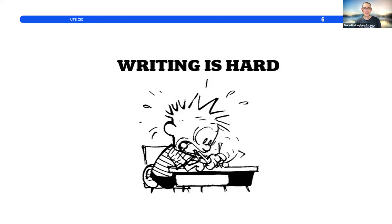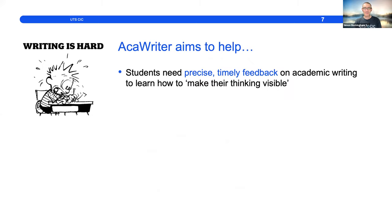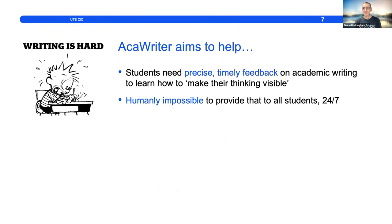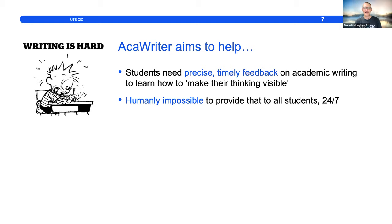Writing is hard and feedback is critical. Students need precise, timely feedback on how to make their thinking visible, but it's humanly impossible to provide 24/7 instant feedback to all students. This is where machines fill a niche. We're not making anyone unemployed — providing constant feedback on draft after draft, at any time of day or night, is not something any academic is putting their hand up for. That's the gap machine intelligence can now contribute to filling.